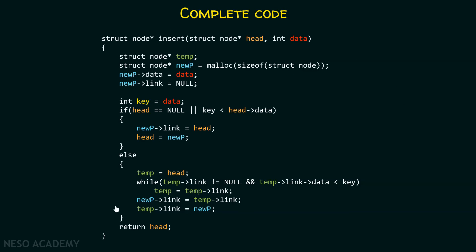Here is the complete code. We have the insert function accepting a head pointer and some data. We have a temp pointer and a new pointer (newp). We allocate memory for the new node and assign data to the data part and null to the link part. The key variable is initialized with data. Then the same traversal and link-update logic follows, and finally we return head back to the main function.